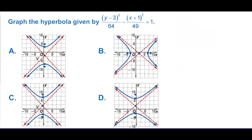Graph the hyperbola — we have a center of (negative 1, 3). We can rule out answers a and b. We go up and down 8 and right and left 7. Since y is first it opens up and down, and going up and down 8 matches answer choice C.